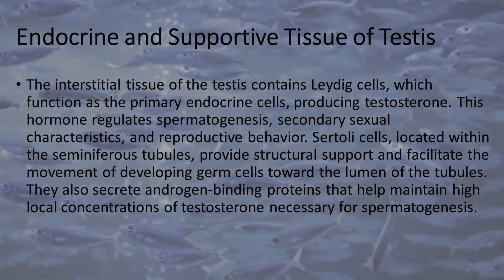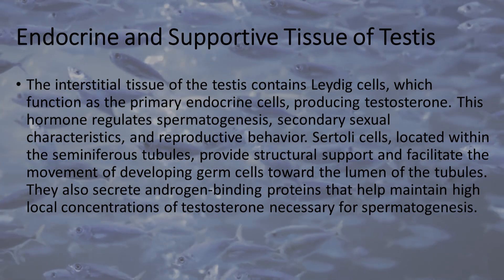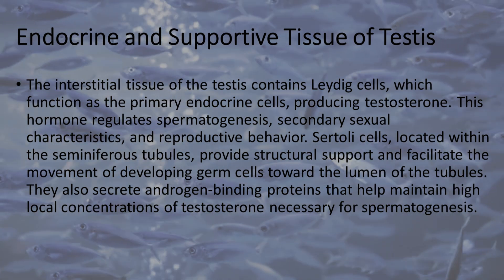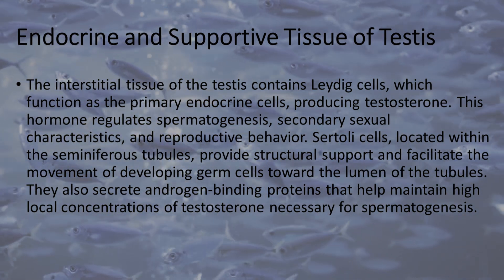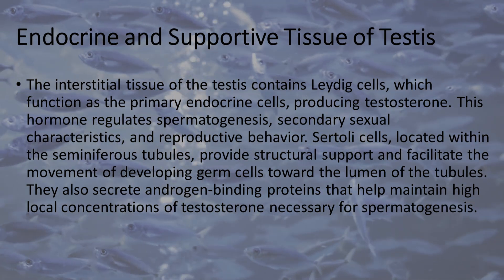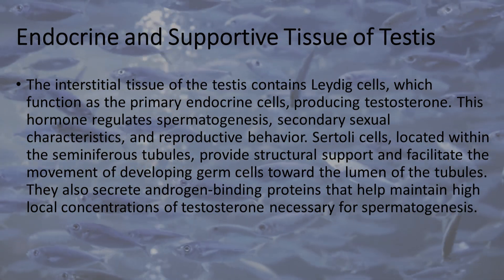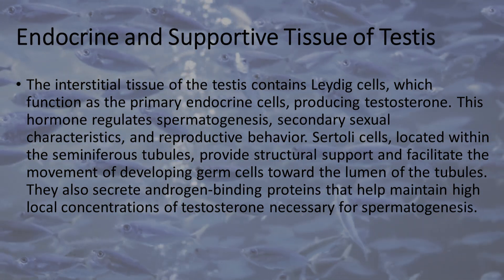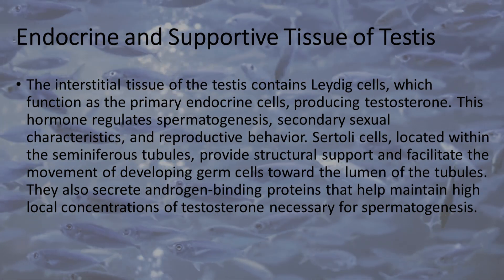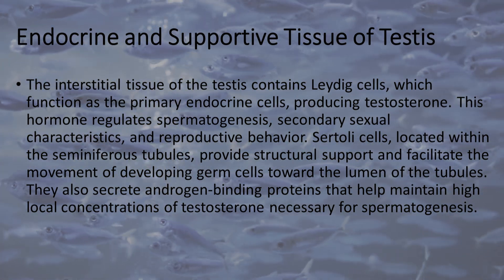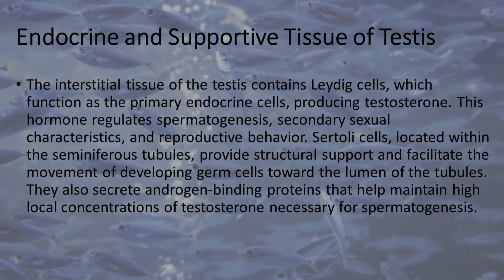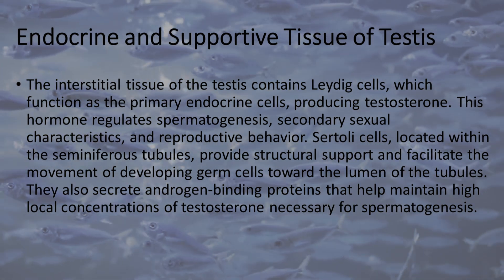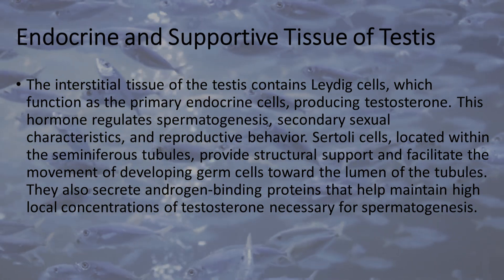Endocrine and Supportive Tissue of Testes. The interstitial tissue of the testes contains Leydig cells, which function as the primary endocrine cells, producing testosterone. This hormone regulates spermatogenesis, secondary sexual characteristics, and reproductive behavior. Sertoli cells, located within the seminiferous tubules, provide structural support and facilitate the movement of developing germ cells toward the lumen of the tubules. They also secrete androgen-binding proteins that help maintain high local concentrations of testosterone necessary for spermatogenesis.